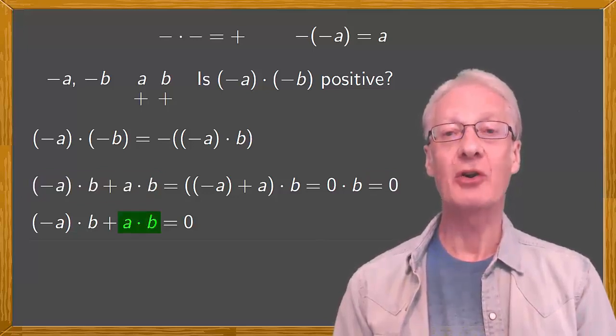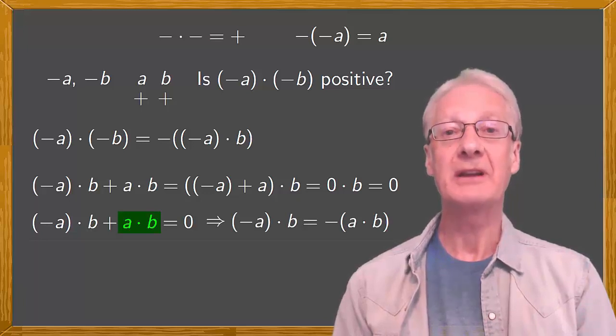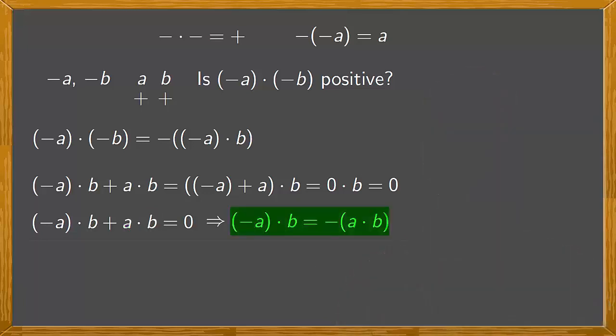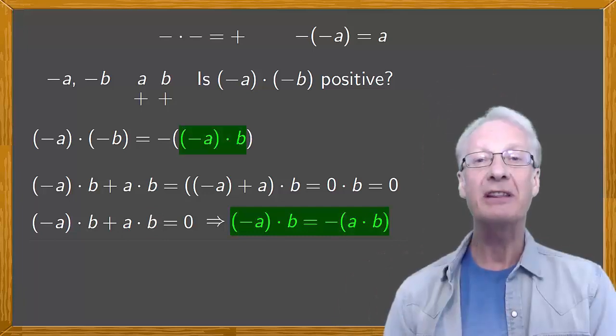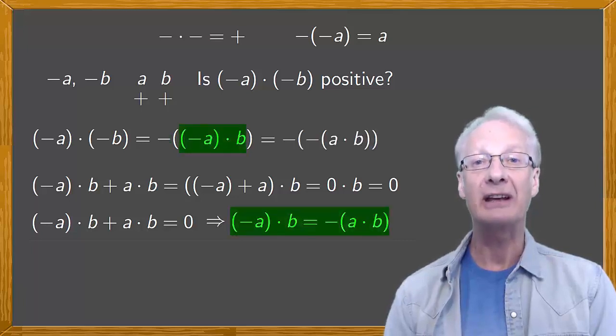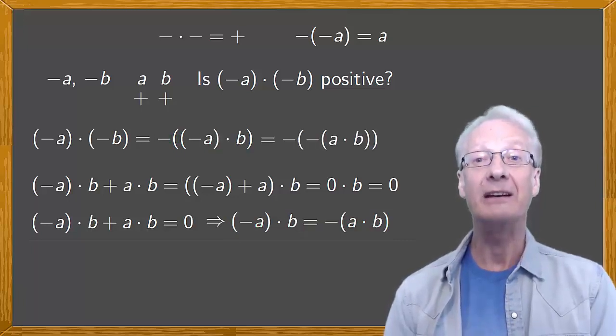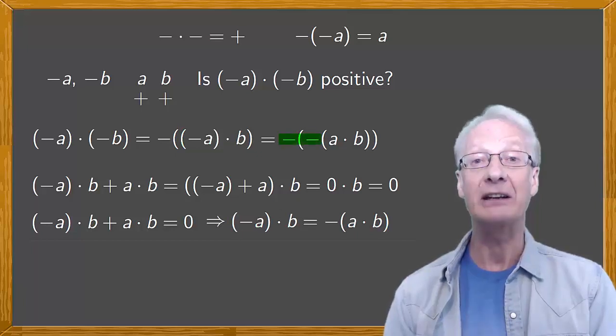Taking the second term over to the other side gives negative a times b equals the negative of a times b. Substituting this in the earlier equality, we have negative of negative a times b. But we've already said that the negative of negative something is positive. And this is equal to a times b.